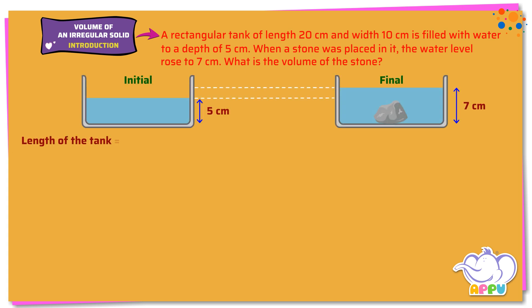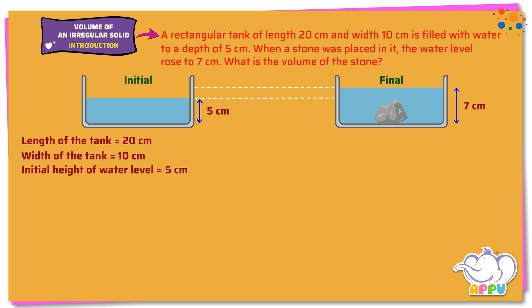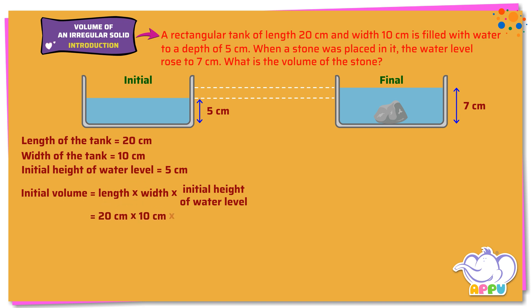Length of the tank equals 20 centimeters. Width of the tank equals 10 centimeters. Initial height of water level equals 5 centimeters. We need to find the volume of the stone. Initial volume equals length times width times initial height of water level: 20 cm × 10 cm × 5 cm = 1,000 cubic centimeters.